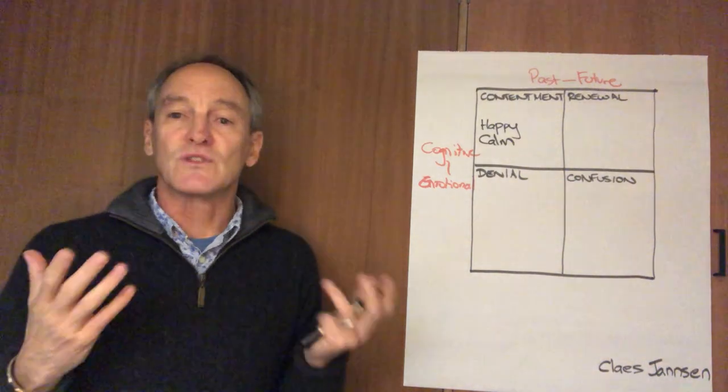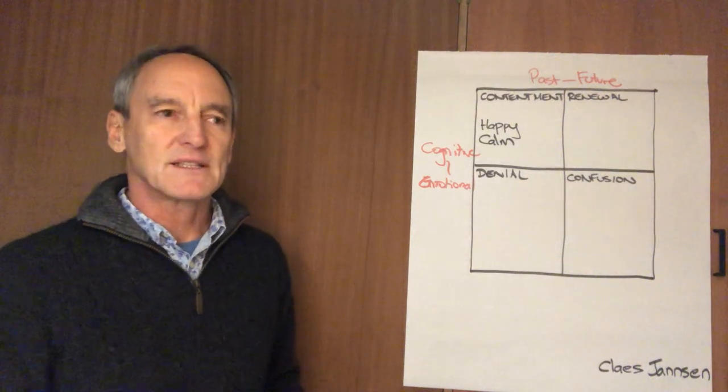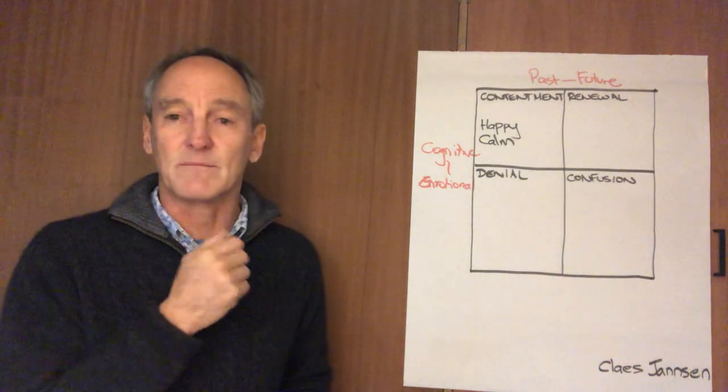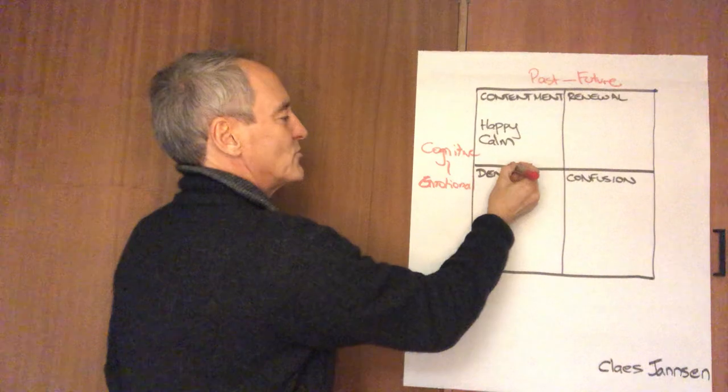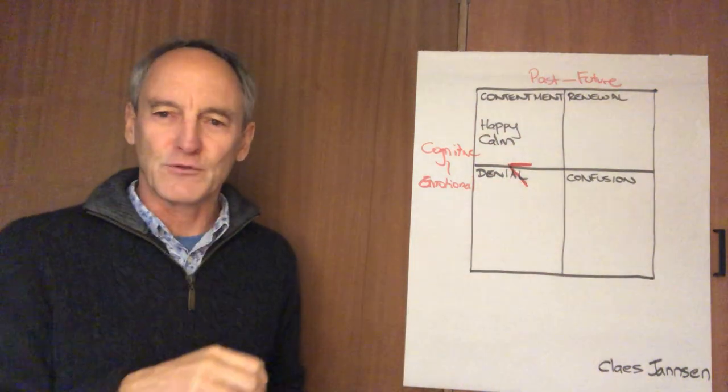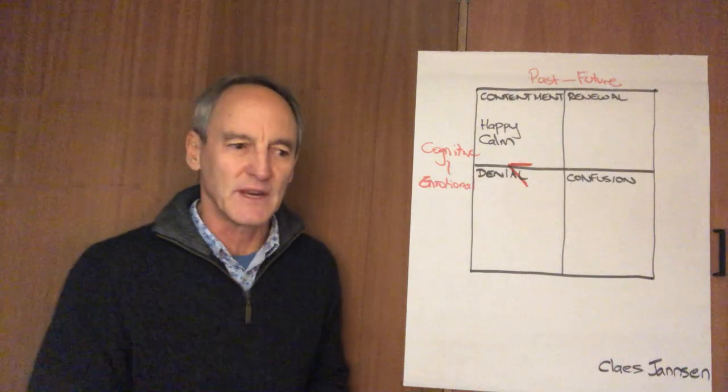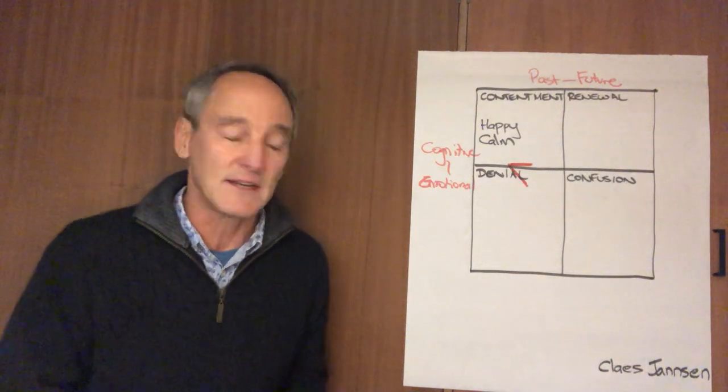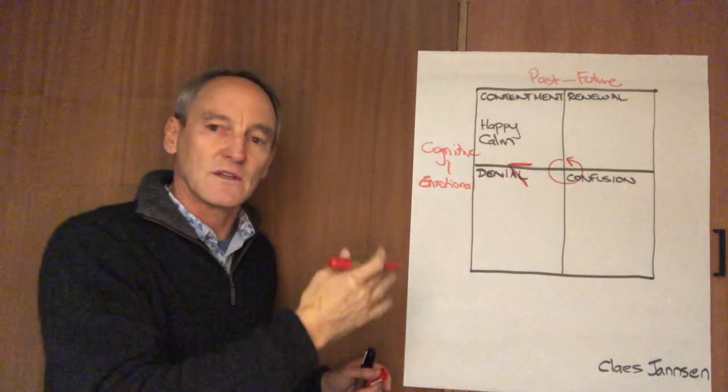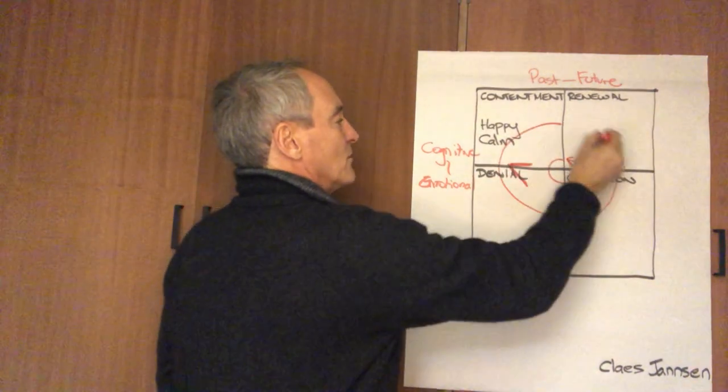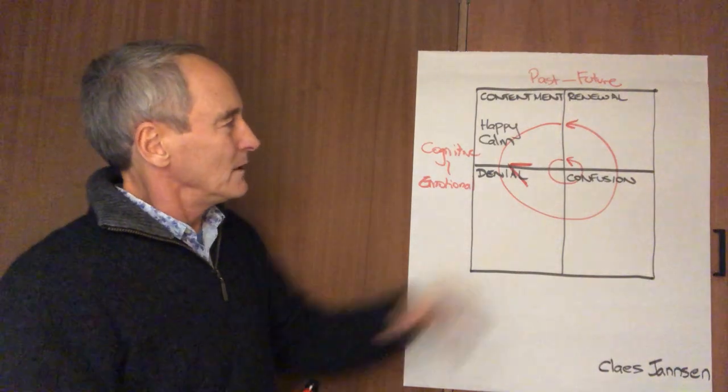Then the change gets announced. Now a change might be announced suddenly or it might appear suddenly. For instance, if I get a positive result back from the doctor, it's a sudden shock, and so I fall through the trap door into the room below. But it might be one that is more slow and sort of dawns on me and builds up as a change process as the communications come out from the senior executive. So you can have a change process that is either slower moving from the past to the future over a longer period of time, or you might have one that is faster. So you get the slower and the faster change.